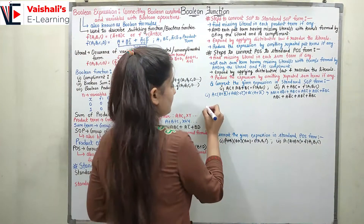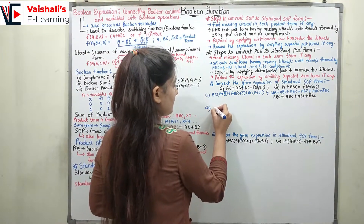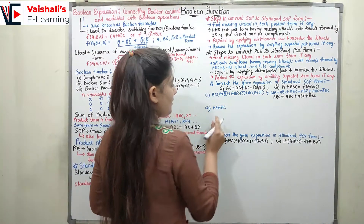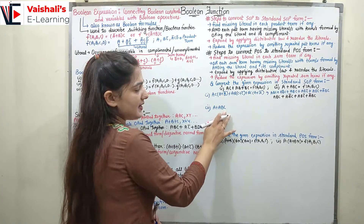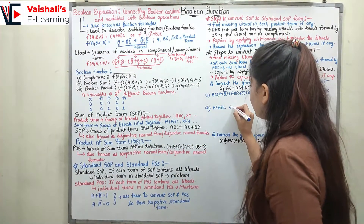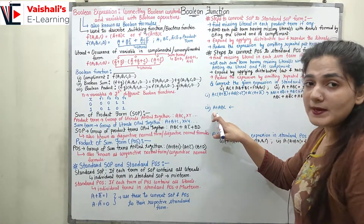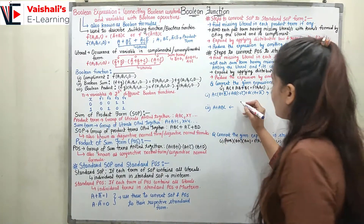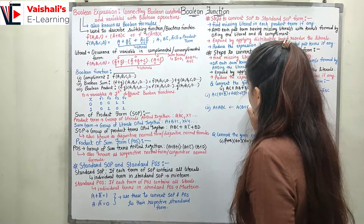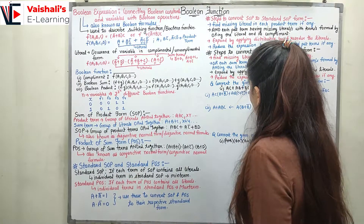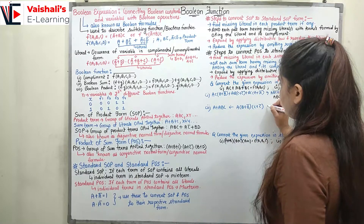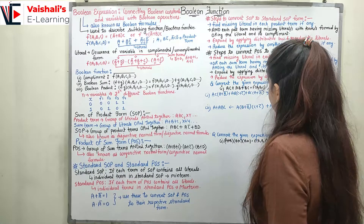For the second question, we have f = a + abc. In the first term 'a', both b and c are missing, so we AND it with (b + b_bar) and (c + c_bar), plus we have the term abc.